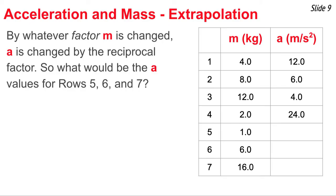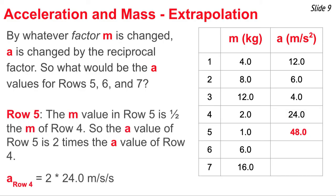We're going to use this principle — by whatever factor the mass is changed, the acceleration is changed by the reciprocal factor — to fill in the acceleration for rows 5, 6, and 7. In row 5, the mass is one-half the mass of row 4, so we take the reciprocal factor (doubling) and double the 24 meters per second squared of row 4, giving 48 meters per second squared. For row 6, its mass is one-half the mass of row 3, so we double the acceleration of row 3, giving 8 meters per second squared.